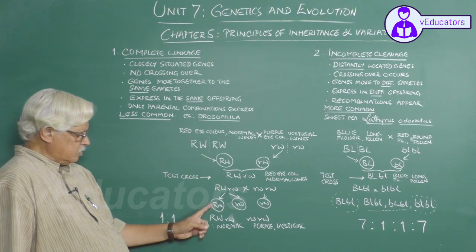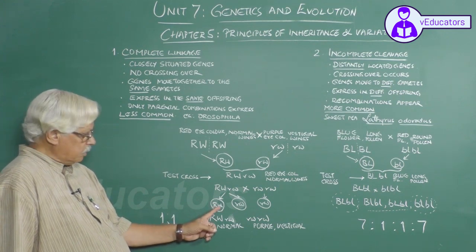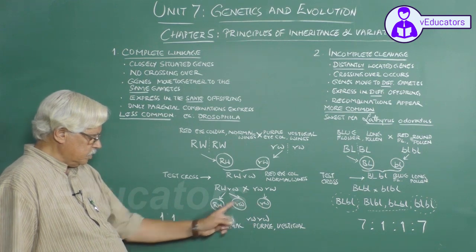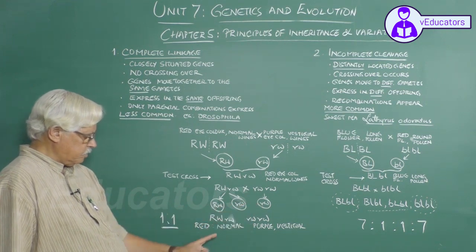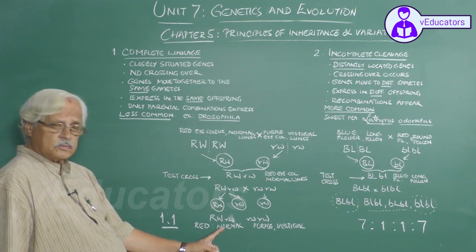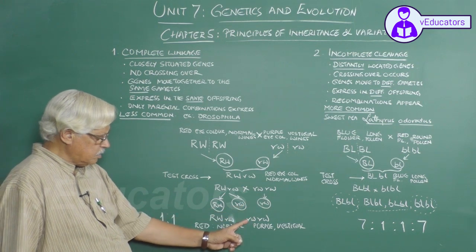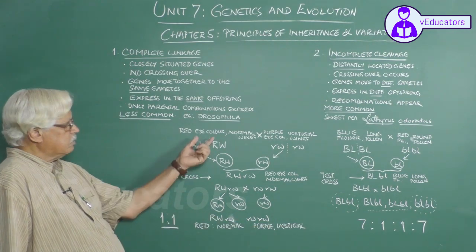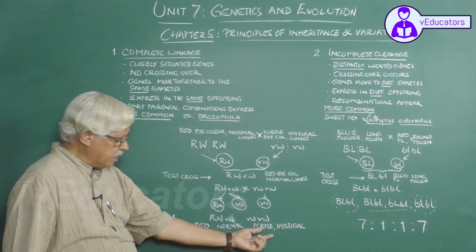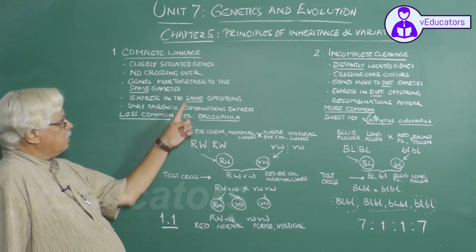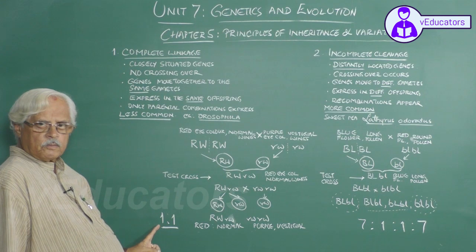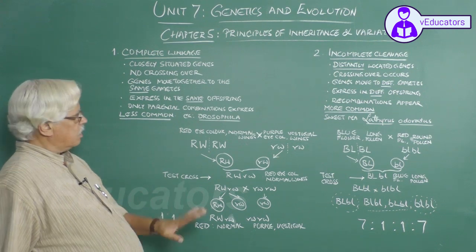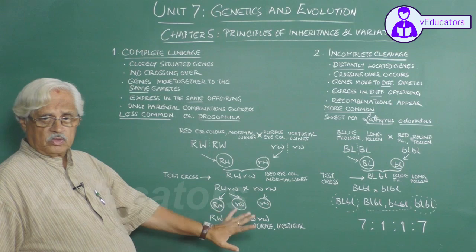The test cross produces capital R capital W / small r small w — red eye color, normal wings — and small r small w / small r small w — purple vestigial. These are both parental combinations: red normal wings and purple eye vestigial wings. Only parental combinations are expressed in a ratio of 1:1. No recombinants appear.